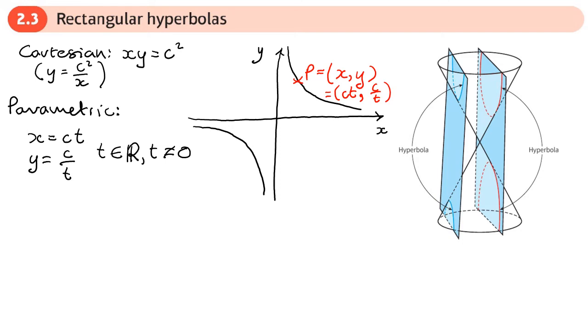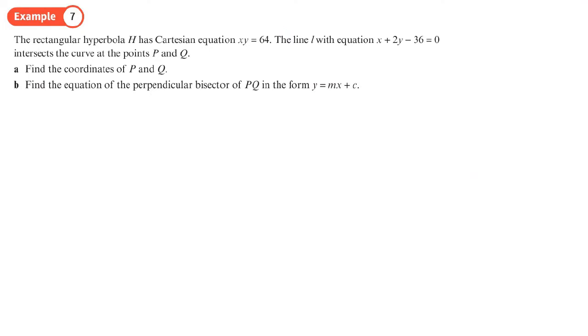The rectangular hyperbola H has Cartesian equation xy equals 64. The line L has this equation and intersects the curve at the points P and Q. Find the coordinates of P and Q.